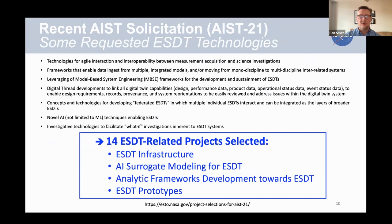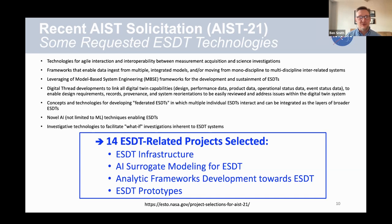There was a recent solicitation called AIC 21, from the ROSES — Research Opportunities in Earth Science — program. You can see some of the technology areas solicited, which reflect what I was just talking about. There were 14 projects selected related to Earth system digital twins that are building out on these areas. These include things like ESDT infrastructure — the wrap-around elements that would start to bring some of these technologies together — AI surrogate modeling, analytic framework developments, and also a handful of prototypes starting to put together digital twins for focused areas and systems.